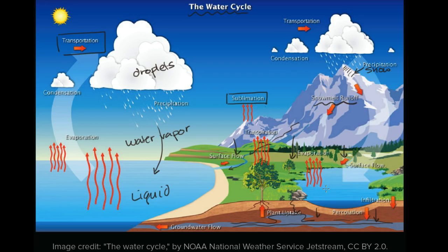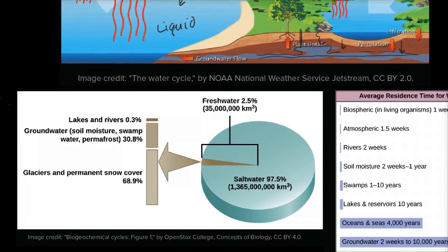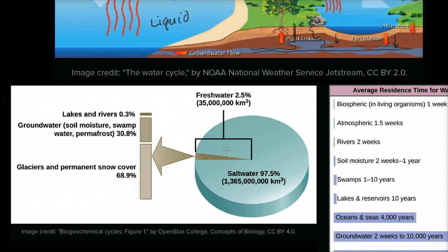As an organism dependent on fresh water — water without salt, as opposed to salt water — we really need fresh water from lakes, rivers, or wells that access aquifers. It turns out very little of the overall water in the world is fresh water. Let me show you this chart: of all the water on our planet, 97.5% is salt water, mostly in our oceans. Only 2.5% is fresh water.